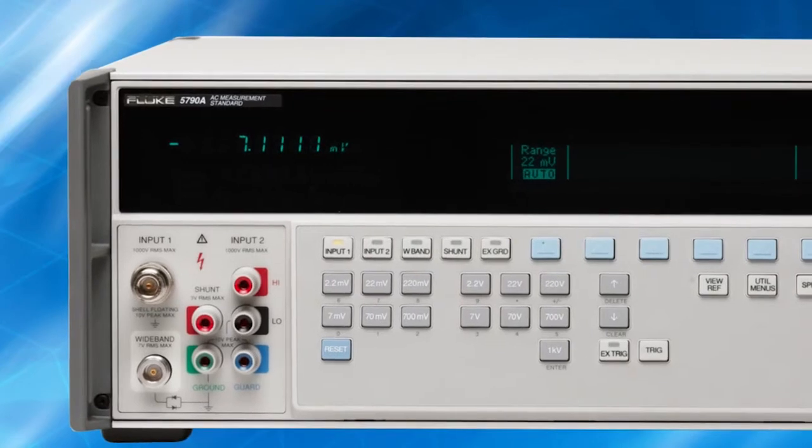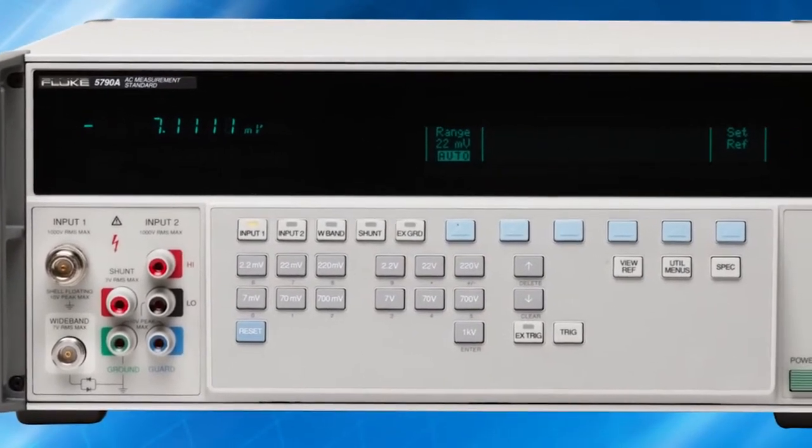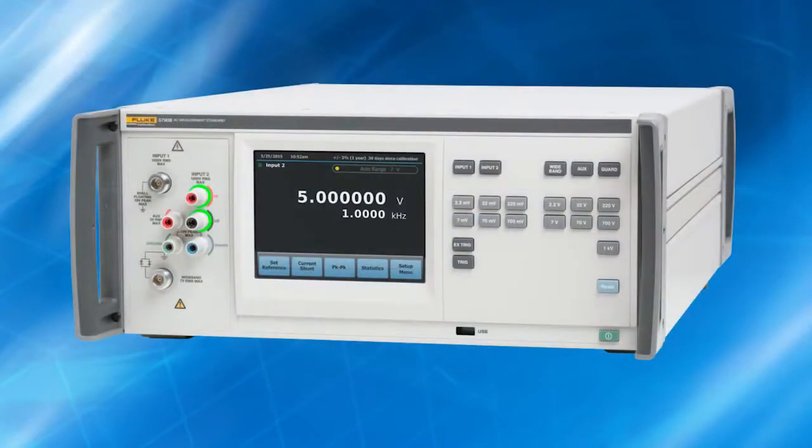Since its release in 1990, the 5790A has been the go-to product for precise AC voltage measurements around the world. The new 5790B has all the features and performance characteristics of the previous 5790A, and we have added five important new features.